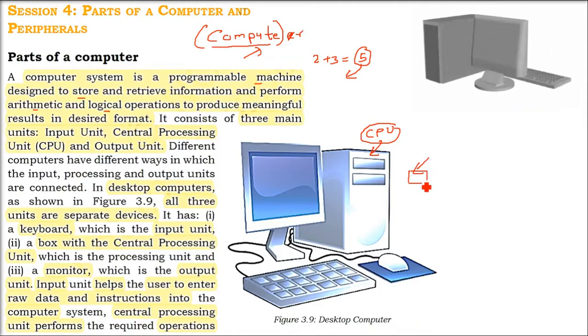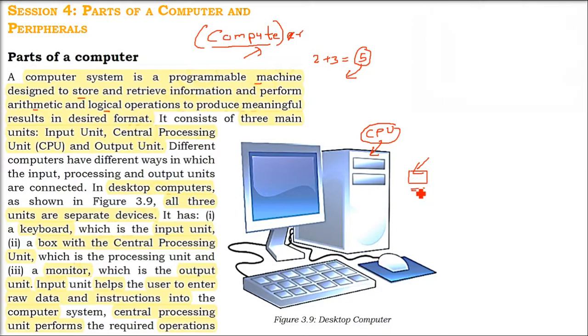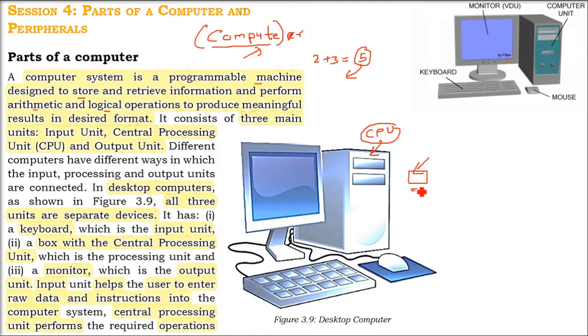For example, it has a motherboard. It has a processor. That processor is the brain of this computer. You know, only processor won't do anything or wouldn't be able to do anything.